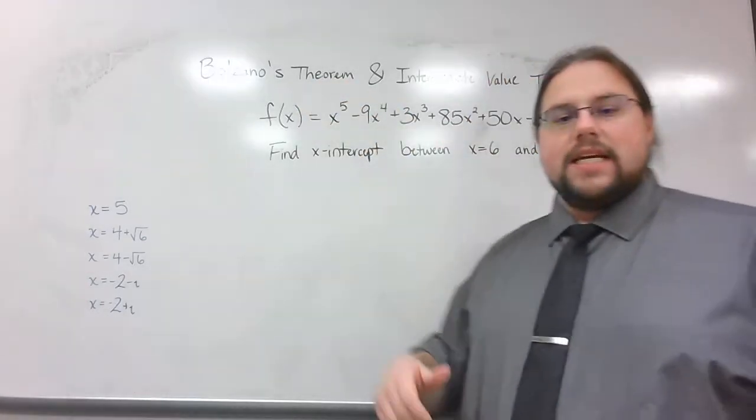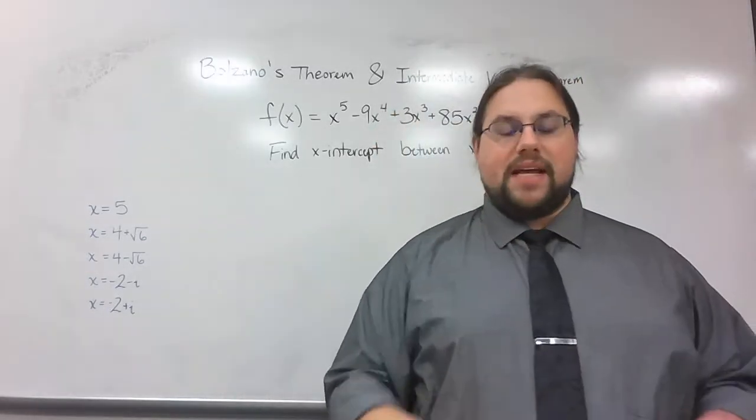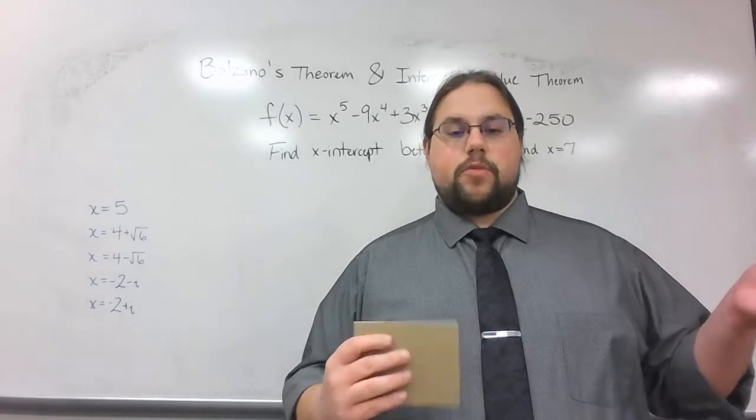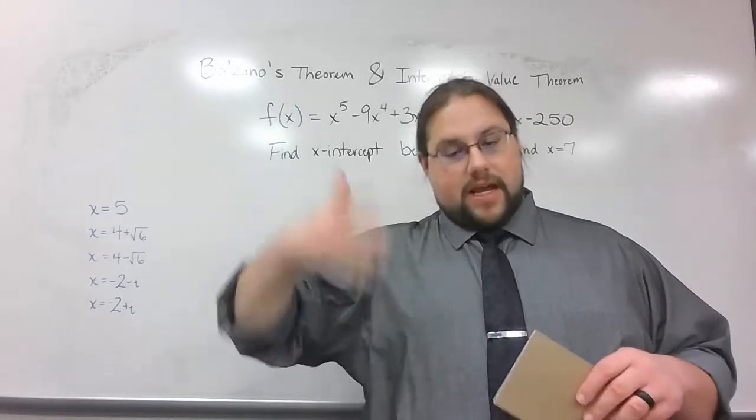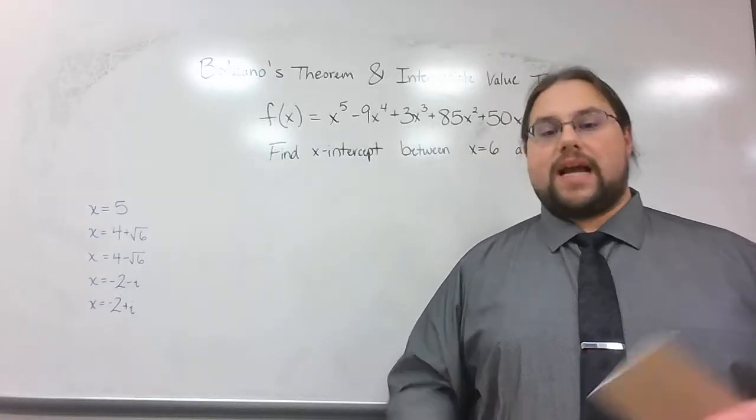The intermediate value theorem basically says if I have these two x values and they make these two y values, that means there's some x value between a and b. There's two x values between what I started with that's going to produce a y value between what I got out as their answers.